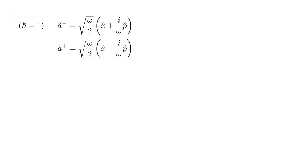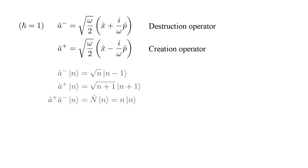It is convenient to work in units where h-bar equals one. We can combine the position and momentum operators to form the operators a-hat minus and a-hat plus. These are the destruction and creation operators. The destruction operator applied to the state n produces square root of n times the state n-plus-one.